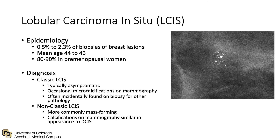Now let's talk specifically about lobular carcinoma in situ. This is a fairly rare pathologic finding in the breast, accounting for 0.5 to 2.3% of biopsies of breast lesions. It is typically found in premenopausal women with a mean age of 44 to 46. With classic LCIS, it will typically be asymptomatic, and it is most often incidentally found on biopsy for other breast pathologies, though microcalcifications may be seen on mammography.